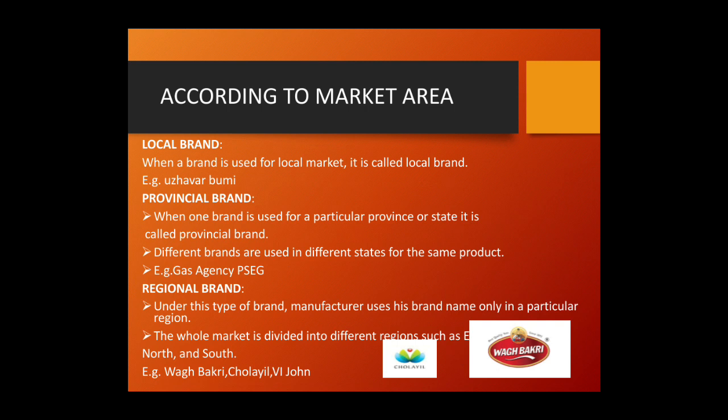Regional brand: the manufacturer uses his brand name only in a particular region, which may be divided in terms of geographical regions like East, West, North and South. The example given is Cholayal, which concentrates on Karnataka; major products familiar in Karnataka and Tamil Nadu include the Medimix brand and Cuticura. Vaabhari is a tea brand quite familiar in Gujarat, with exclusive tea lounges offering more than 200 varieties of tea. They also export tea products to more than 40 countries, and people still seek out their exclusive lounges to taste the brand.